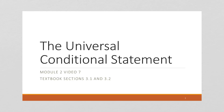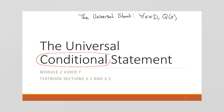In the last couple of videos, we've talked about the universal statement, which says for all x in our domain, our quantifier is true. But now we're going to look at something a little bit more complex: the universal conditional statement. A conditional statement is an if-then, or p implies q. So we're combining the universal statement with the conditional statement to get the universal conditional statement.